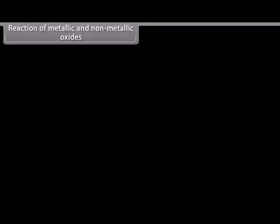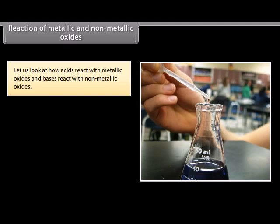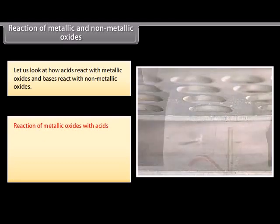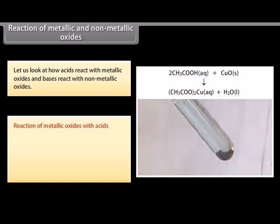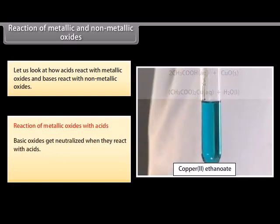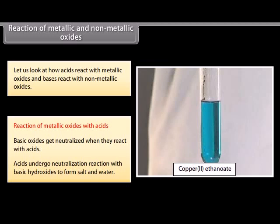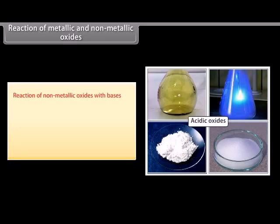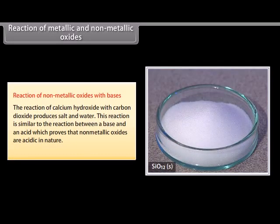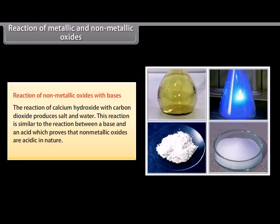Reaction of metallic and non-metallic oxides. Now that you have seen how acids and bases react with metals, hydrogen carbonates, and with each other, let us look at how acids react with metallic oxides and bases react with non-metallic oxides. Reaction of metallic oxides with acids. Oxides that add on hydroxyl ions to their molecules are called basic oxides. These oxides get neutralized when they react with acids. Acids undergo neutralization reaction with basic hydroxides to form salt and water. Reaction of non-metallic oxides with bases. The reaction of calcium hydroxide with carbon dioxide produces salt and water. This reaction is similar to the reaction between a base and an acid. This proves that non-metallic oxides are acidic in nature.